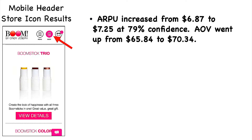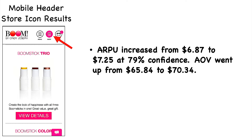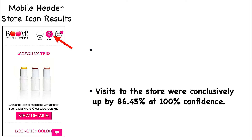Looking at the actual results from this test: average revenue per user increased from $6.87 to $7.25 at an 80% confidence rate — not a full winner. Average order value went up by nearly $5, but those aren't at a high enough confidence rate. Here's where this really wins: visits to the store were up conclusively by 86.45% at a 100% confidence rate on mobile. 86% more people visiting the store on mobile, 100% of the time — that is incredible for e-commerce.